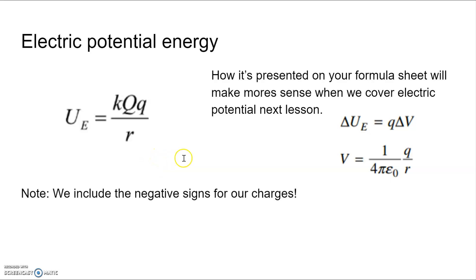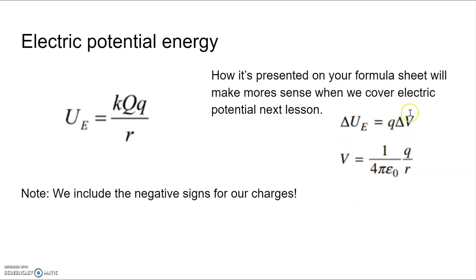How this is presented on your formula sheet will make more sense when we cover electric potential in the next lesson. They have a formula relating electric potential energy to what's called electric potential — lots of confusing terms this unit — where electric potential V equals kq/r. If you plug that V into the top equation, you end up with U = qV. Just realize that electric potential energy has the formula with the two charges in the numerator with k, divided by r — this is not an inverse square law, just an inverse law.